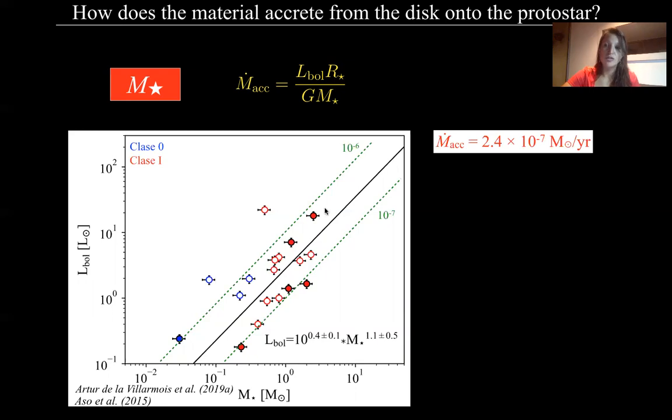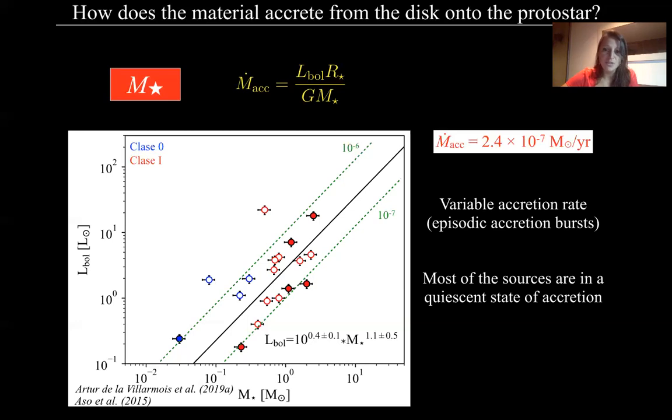If we want to think that the mass accretion rate is constant with time, this is not consistent with the observables of bolometric luminosity and also final masses. And this was also known as the luminosity problem. But this is the observational part of the problem. So this is consistent with the variable mass accretion rate. The accretion must occur in episodic bursts and most of the sources are in a quiescent state of accretion. They will gain a significant amount of mass in a short period of time.